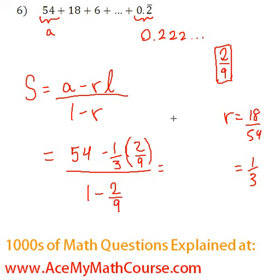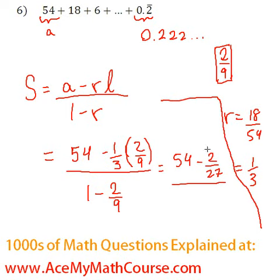Let's work that out. That's going to translate into 54 minus 2 over 27, because 1 times 2 is 2 and 3 times 9 is 27, all over 1 minus 2 over 9, which reduces to 7 over 9, since 1 is just 9 over 9, so 9 minus 2 is 7.